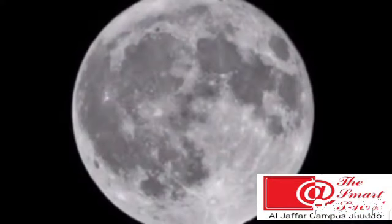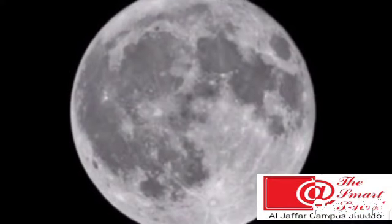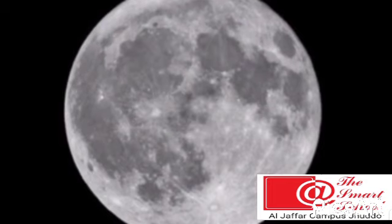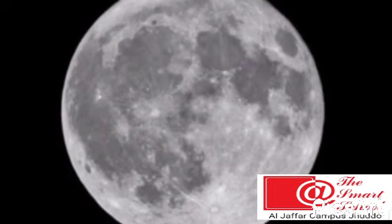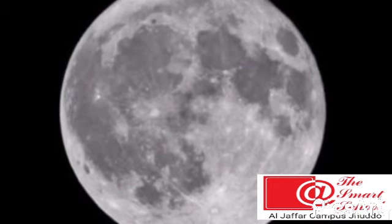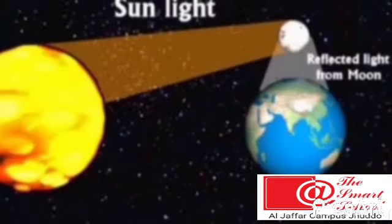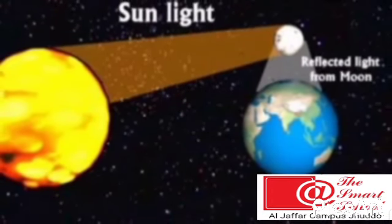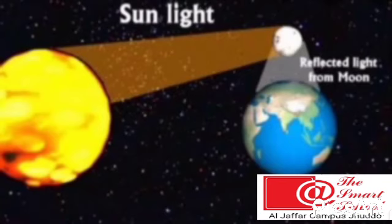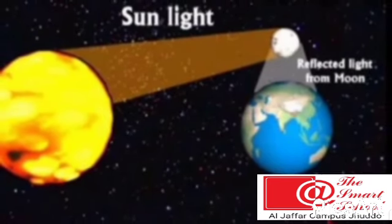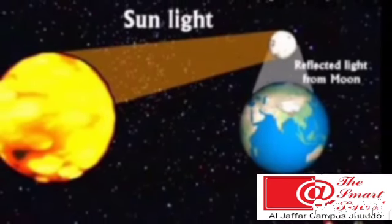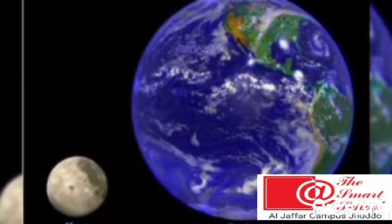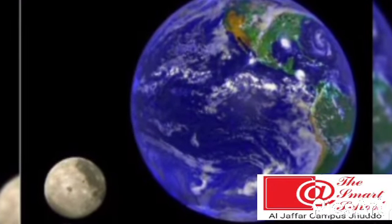The Moon. Like earth, the moon is also shaped like a ball. The moon is made up of rocks and does not give out its own light. When sunlight falls on the moon, it looks bright. The moon is smaller than the earth. It travels around the earth in a circle called an orbit.